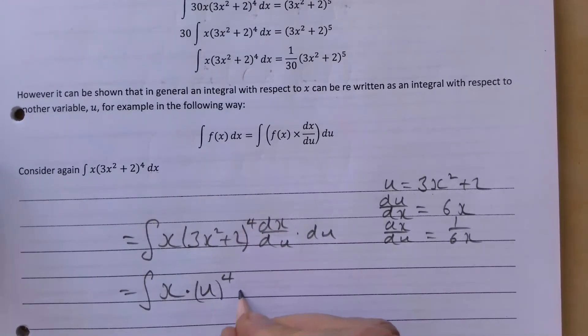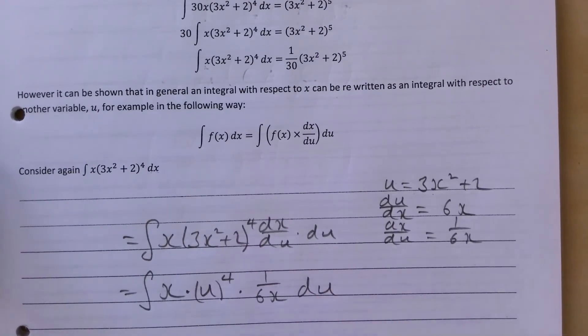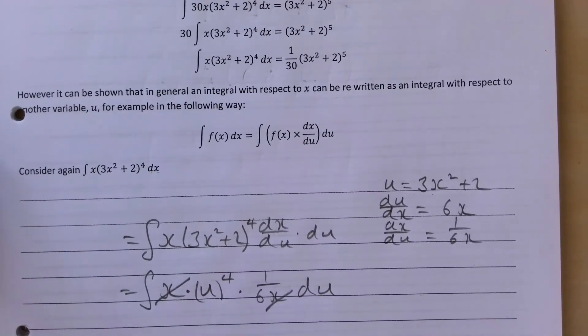Our dx/du is 1/(6x). In this particular case, hopefully you notice there that the x and x here are going to cancel out. So we have 1/6 u⁴ du.